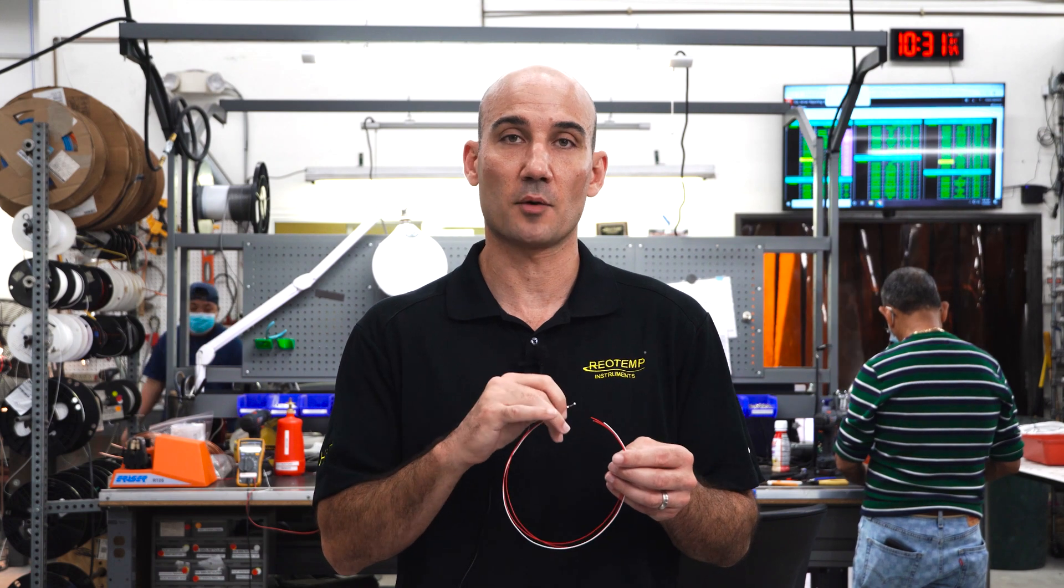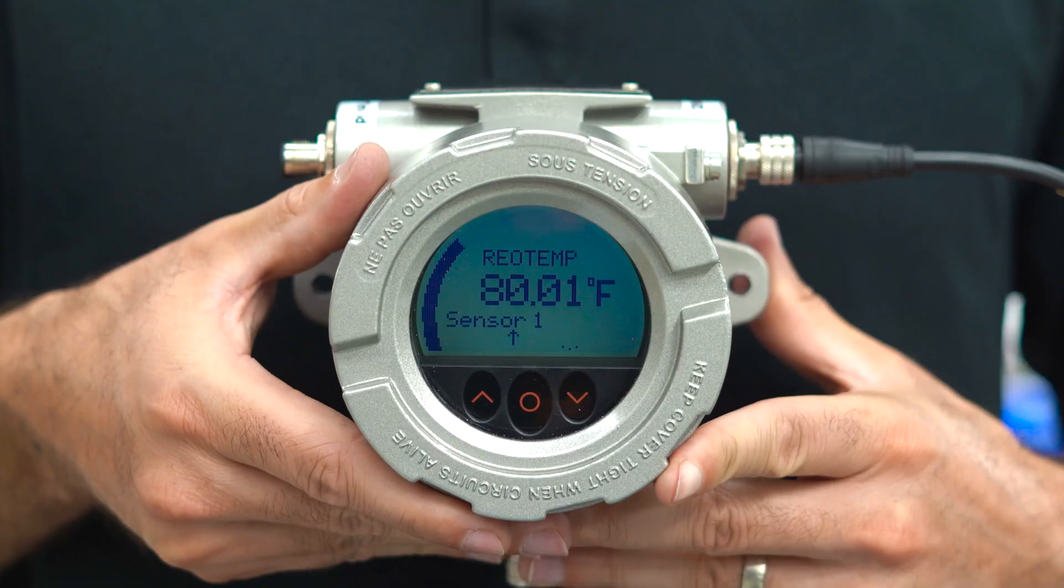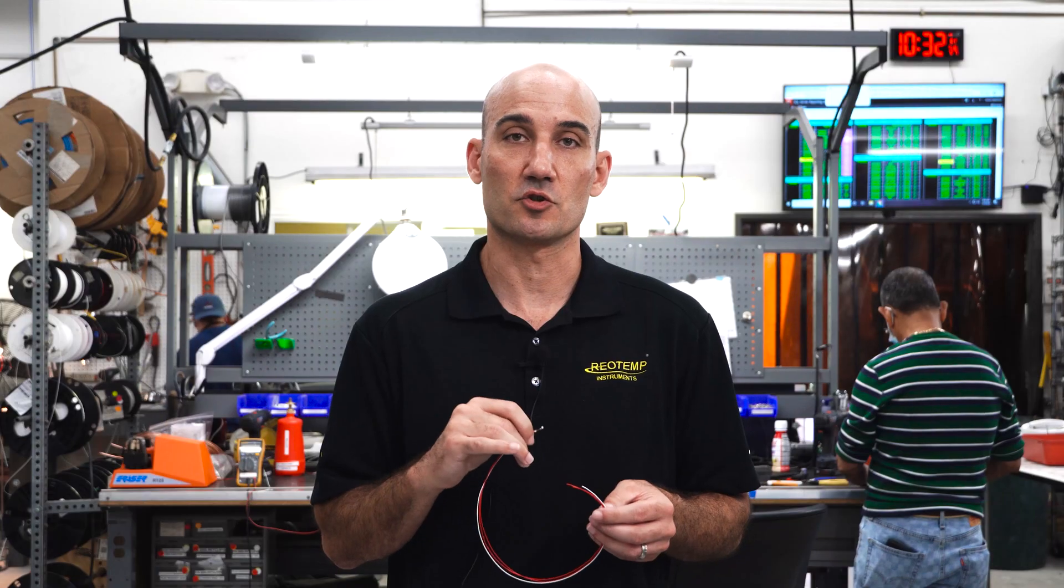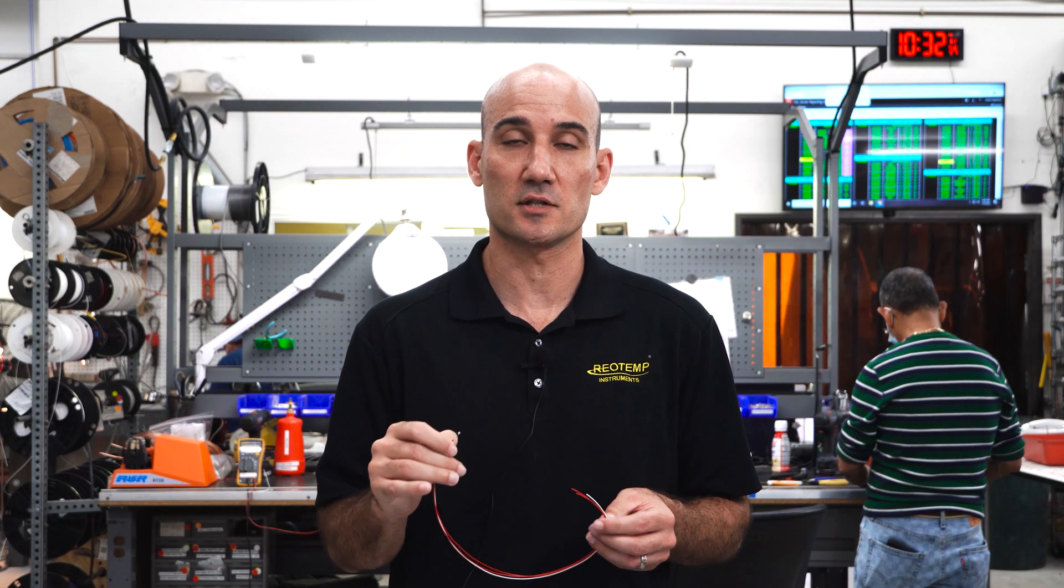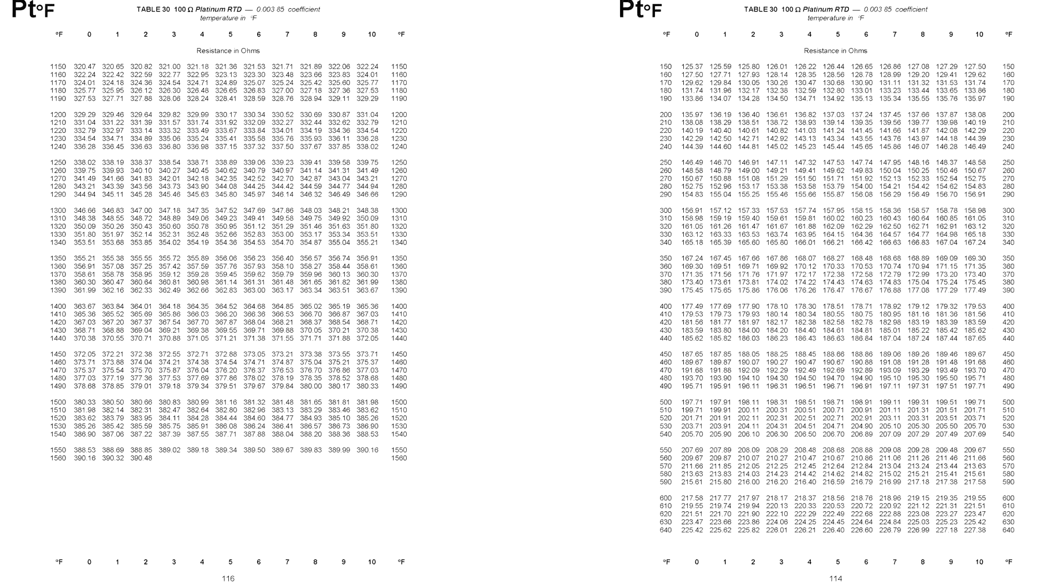All you need to do is hook up these wires to a temperature transmitter or DCS system. That temperature transmitter will then take that resistance and correlate it into a temperature using a table.